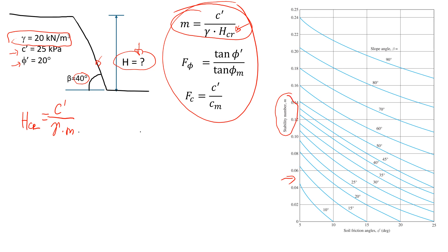The chart I'm going to use, you can find in any textbook. For this chart, we need to know the slope angle — in our case it's given as 40 degrees — and we also need to know the soil friction angle, which is 20 degrees. So at slope angle 40 and friction angle 20, the value of m I'm going to get from the chart looks like it's going to be 0.05.